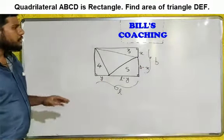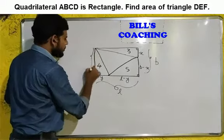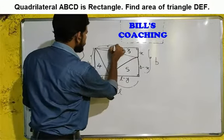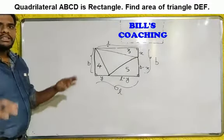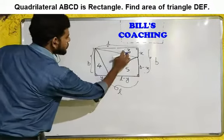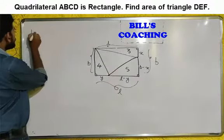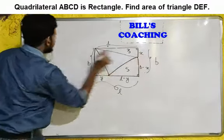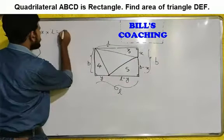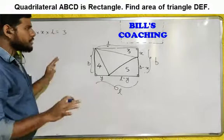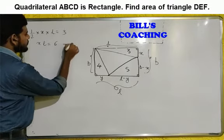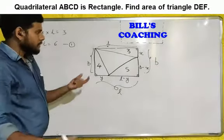Now, the opposite sides of the rectangle are also B and L respectively. Now we apply the area of triangle formula for the first triangle: half into base X multiplied by height L equals area 3 square units. This gives us XL equals 6. That is equation 1.